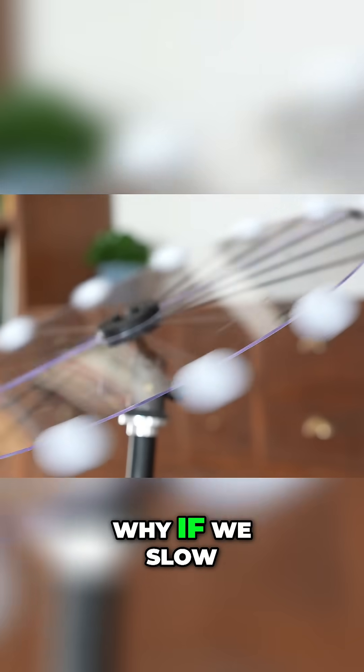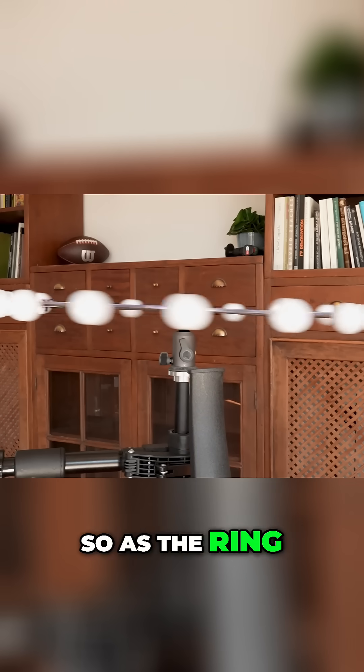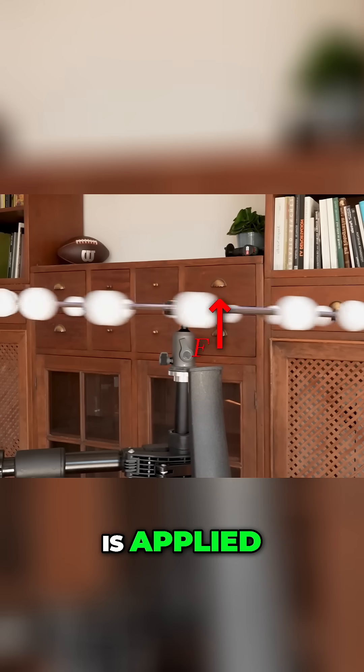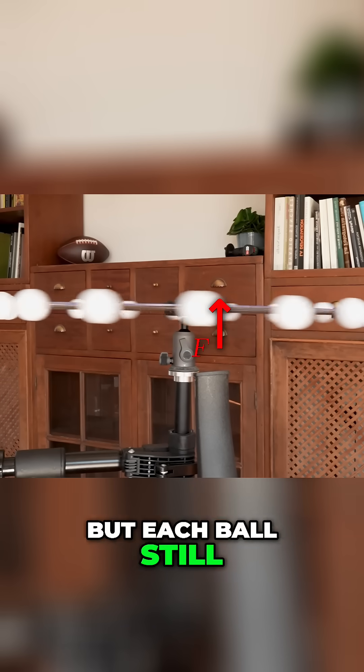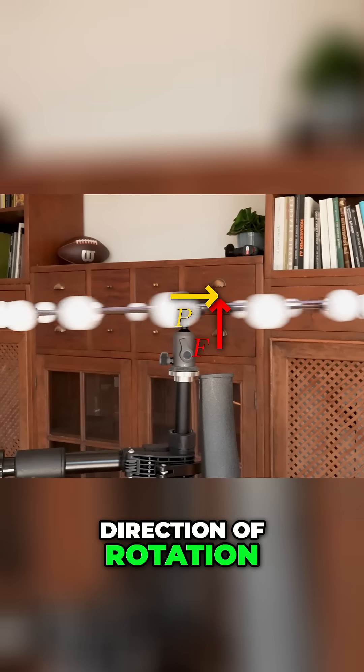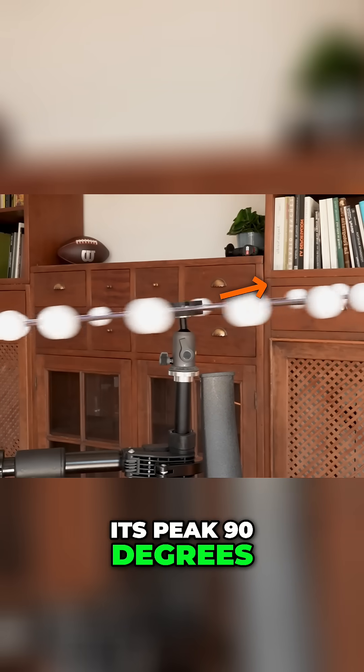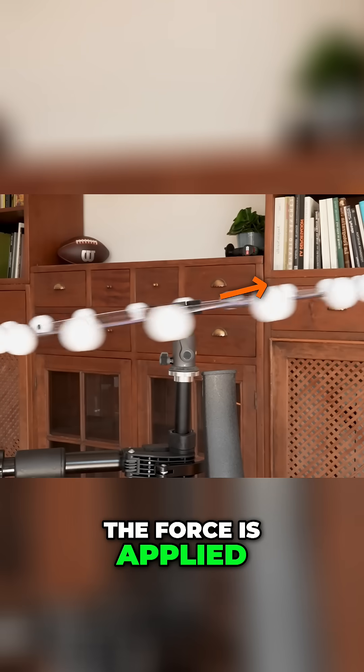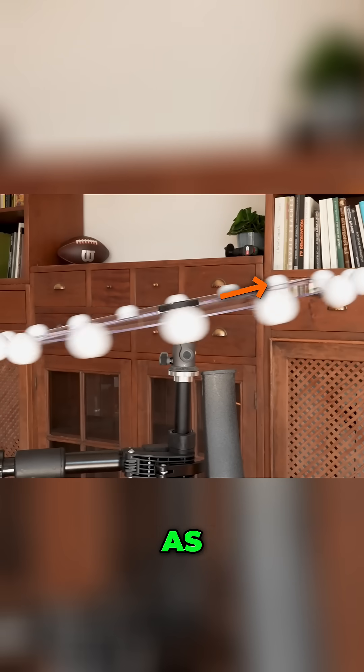And you can see why if we slow it down. So as the ring passes the leaf bar, that's where the force is applied. But each ball still has momentum in the direction of rotation. So it actually reaches its peak 90 degrees further along from where the force is applied. And this is known as gyroscopic precession.